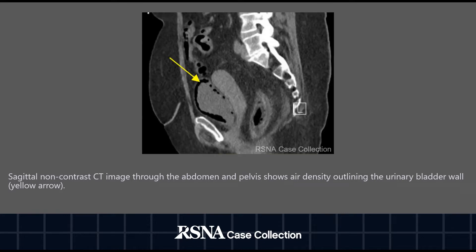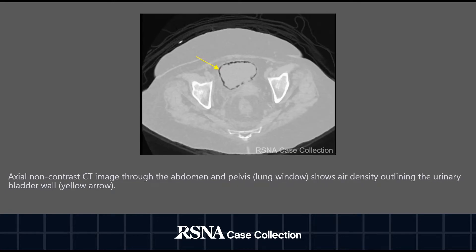This is an axial non-contrast CT image through the abdomen and pelvis in lung window showing air density outlining the urinary bladder wall (yellow arrow).